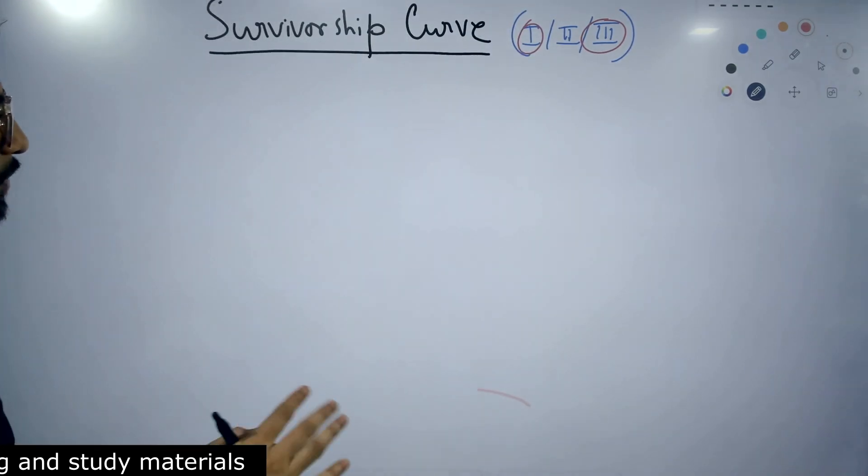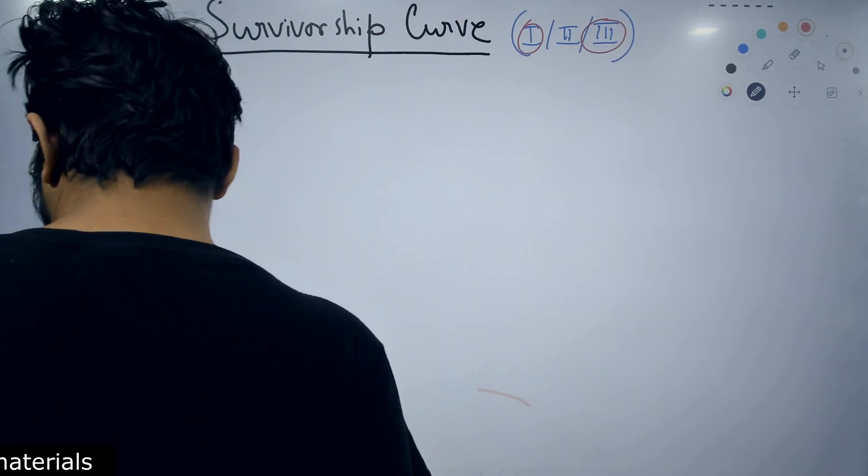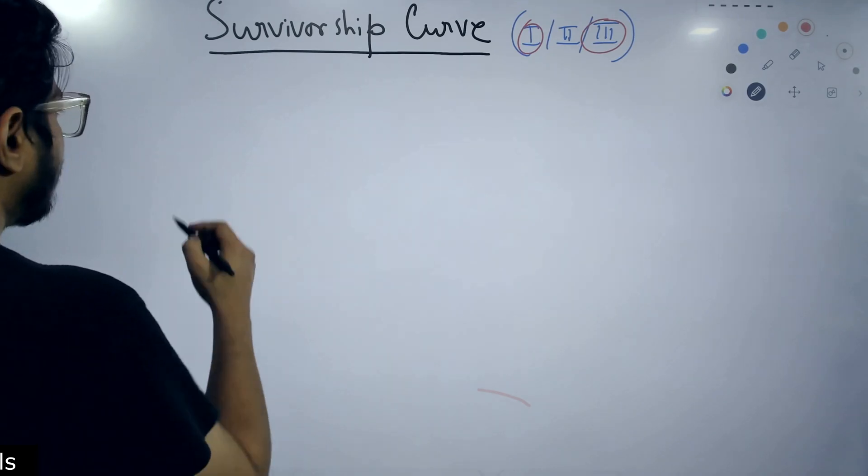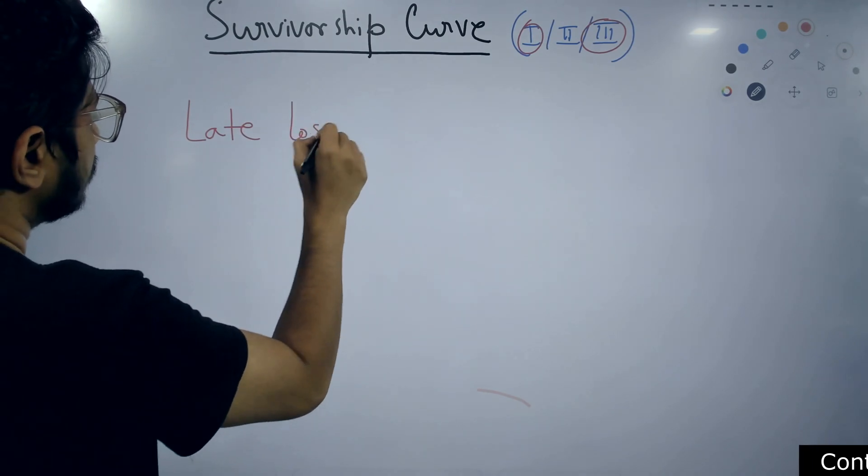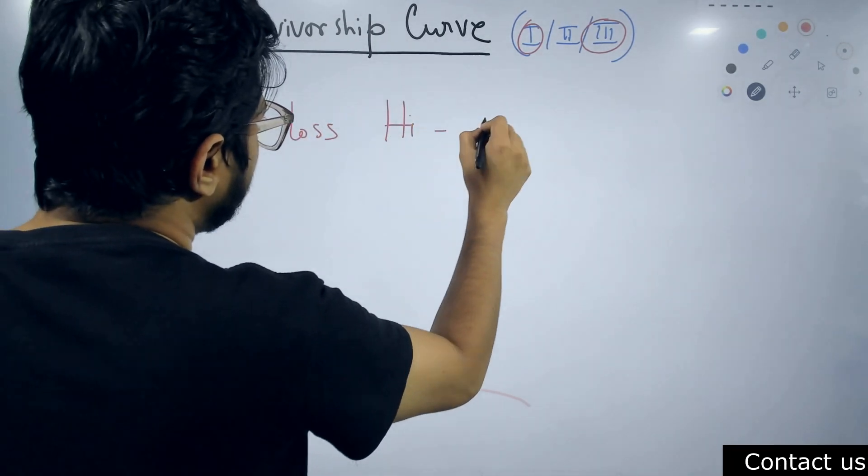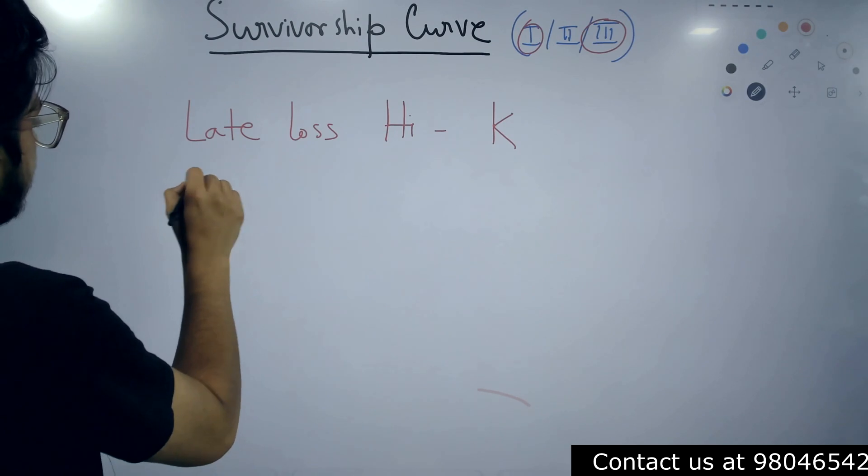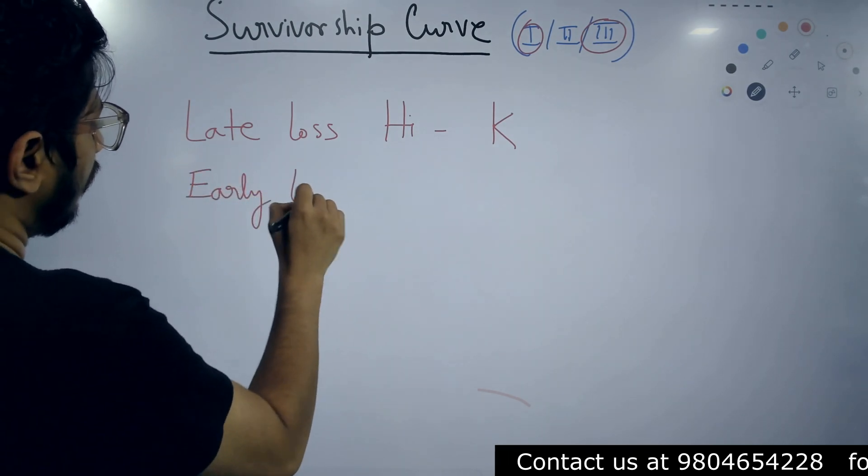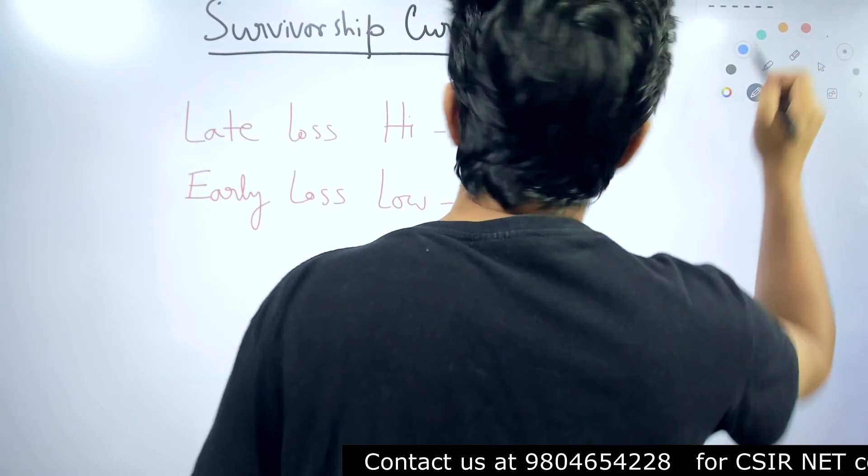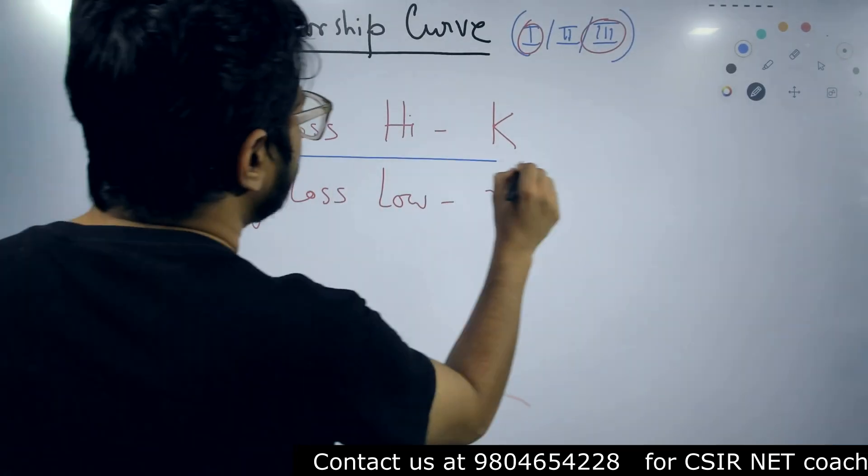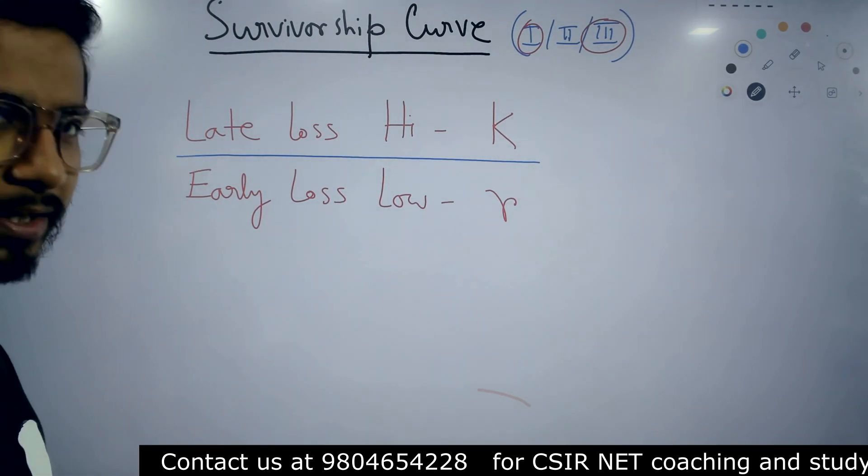How to remember the survivorship curves? I'm not going to draw the graph and everything, but I can tell you the difference between Type 1 and Type 3. The first thing I will write is: late loss, high, K. This is the first mnemonic. And the second one is: early loss, low, R. These are the two things you need to remember in order to understand Type 1 and Type 3 survivorship curves quite easily.